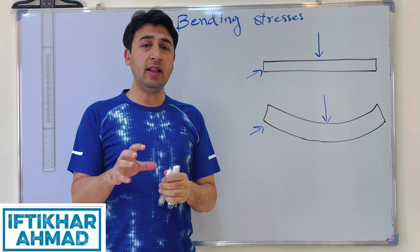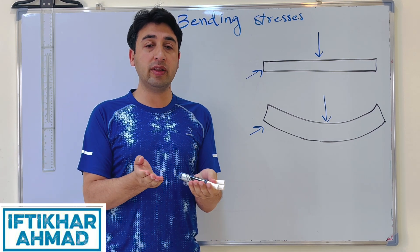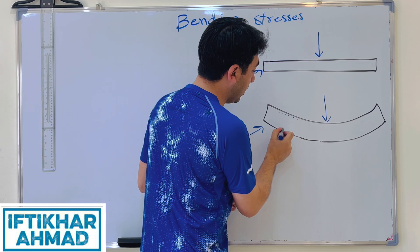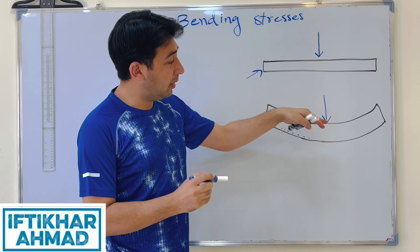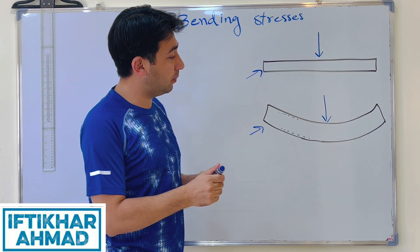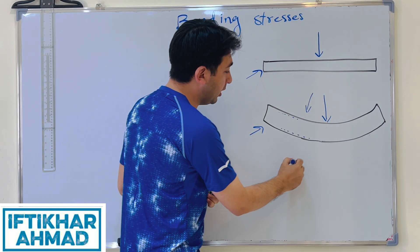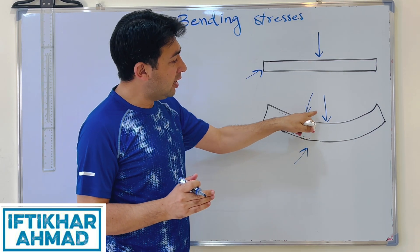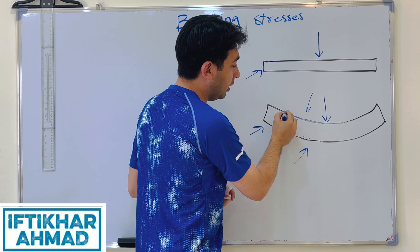Unlike direct stresses such as tensile or compressive stresses, bending stresses are not uniformly distributed over the cross-section of the beam. We cannot say the bending stress at one point is the same as at another. When the beam bends, the top side takes a concave shape and the bottom side is convex.